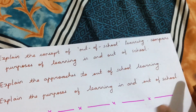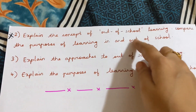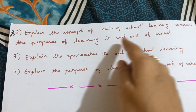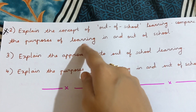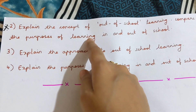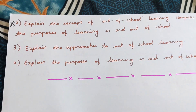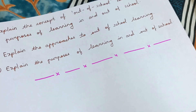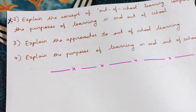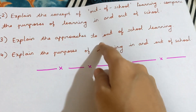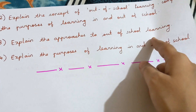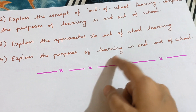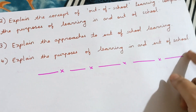Third: explain the concept of out of school learning. Fourth: compare the purposes of learning in and out of school. This question is also very important and has been asked many times. The first and second questions have also been asked many times. The third question is explain the purposes of learning in and out of school.